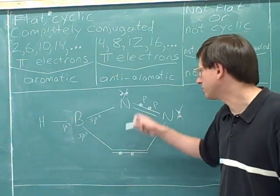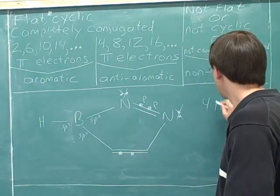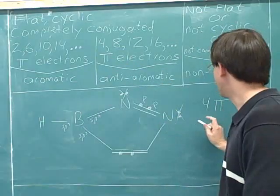So how many pi electrons do we have? One, two, three, four. Anti-aromatic.